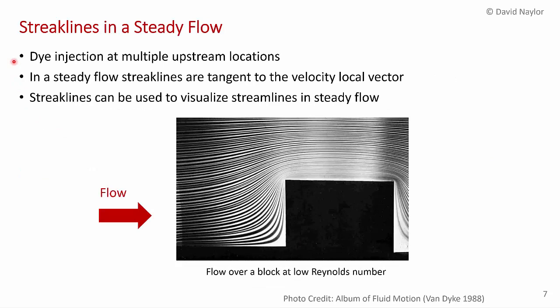Now in that previous example, the wake would have been unsteady. So here's an example of using streak lines in a completely steady flow. What we have is flow over a rectangular block at low Reynolds number and dye is being injected at multiple points upstream. And in a steady flow, streak lines are tangent to the local velocity vector. So streak lines can be used to visualize streamlines in a steady flow.